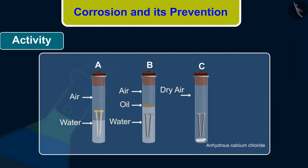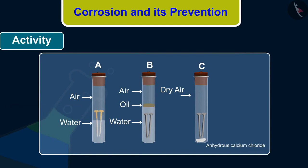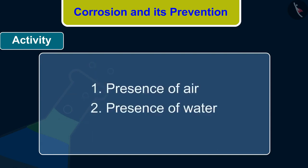You will observe that iron nails rust in test tube A, but they do not rust in test tubes B and C. In test tube A, the nails are exposed to both air and water. In test tube B, the nails are exposed to only water. And the nails in test tube C are exposed to dry air. This tells us that the conditions required for iron articles to rust are: (1) presence of air, and (2) presence of water.